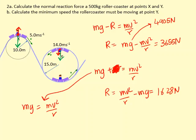And if we make V the subject, you get root of gR, which is 12.13 meters per second. So here if he goes too slowly, if he goes less than 12.13 meters per second, he will lose contact with the track and fall inwards reducing his radius.